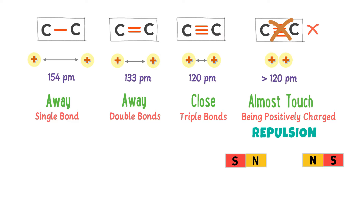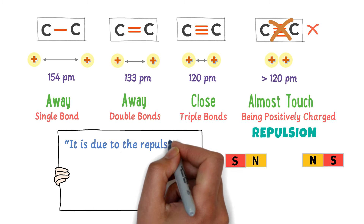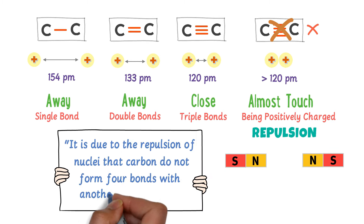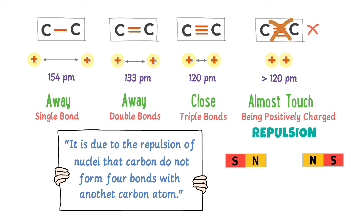It is due to the repulsion of the nuclei that carbon does not form four bonds — or tetravalent bonds — with another carbon atom. It is due to the repulsion of nuclei that carbon does not form four bonds or tetravalent bonds with another carbon atom. I hope you have understood this important concept.